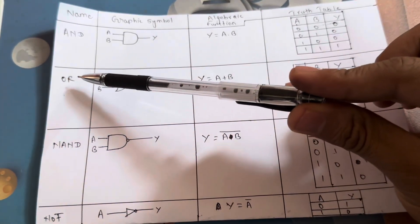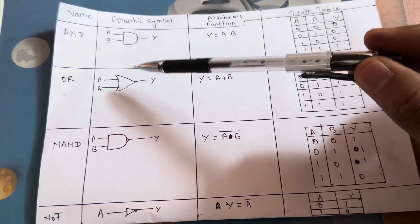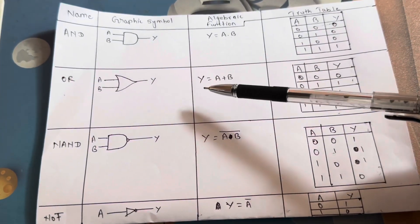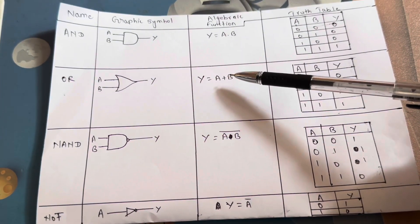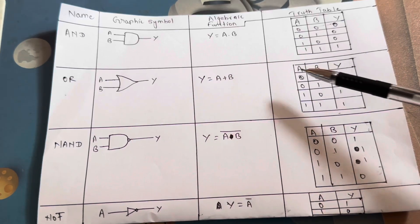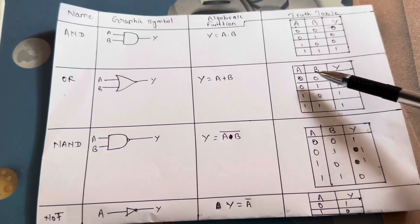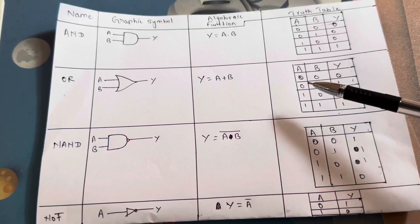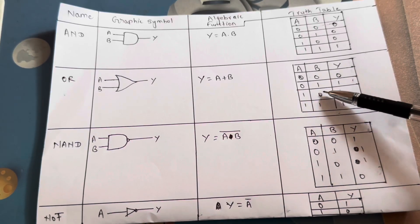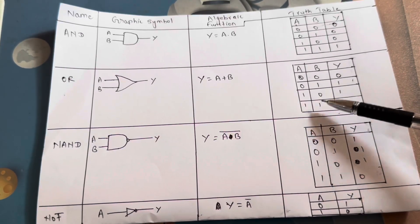Now let's talk about the OR gate. In the OR gate, we will have a graphic representation. The algebraic function is Y equals A plus B. Let's go through the table: 0 plus 0 is 0; 0 plus 1 is 1; 1 plus 0 is 1; and 1 plus 1 is 1.